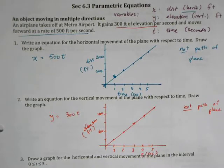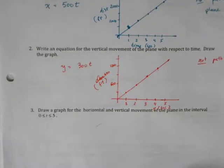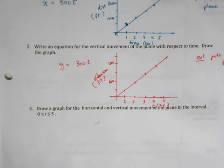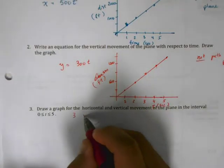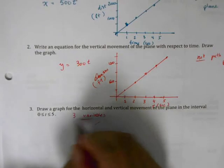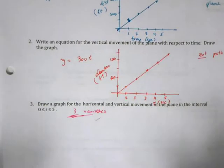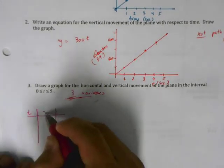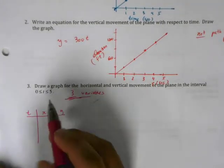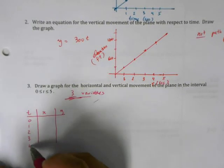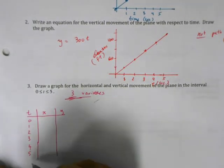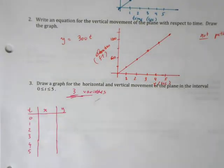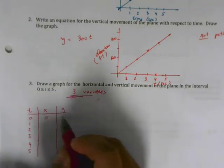Now for part three: draw a graph for the horizontal and vertical movement of the plane at the same time. This is a bit tricky because we're dealing with three variables and trying to graph them on a two-dimensional surface. To do this, let's start by making a table with columns t, x, and y, with t ranging from zero to five.